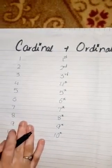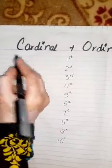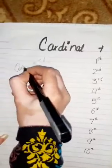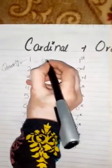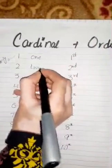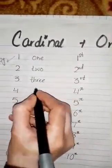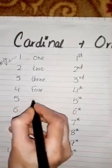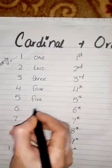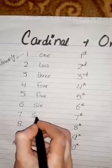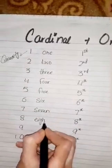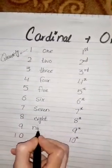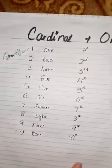What are cardinal numbers? When we talk about the quantity of something, we use cardinal numbers. Now I write spelling: 1 one, 2 two, 3 three, 4 four, 5 five, 6 six, 7 seven, 8 eight, 9 nine, and 10 ten.